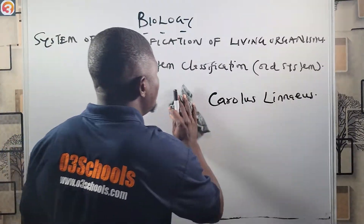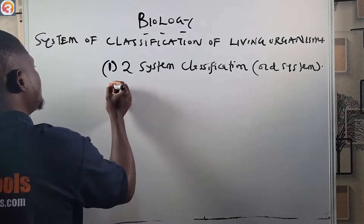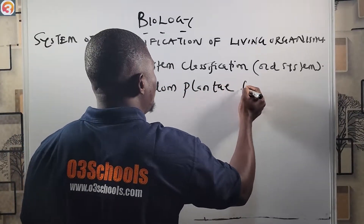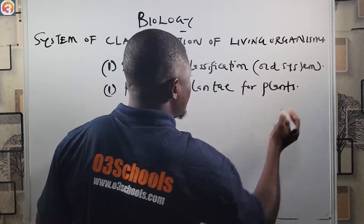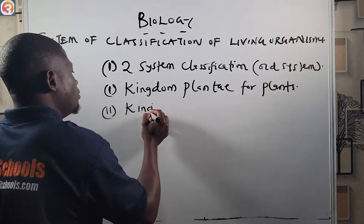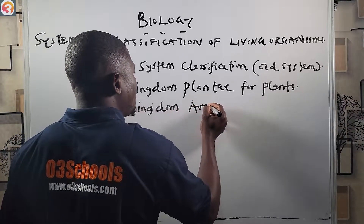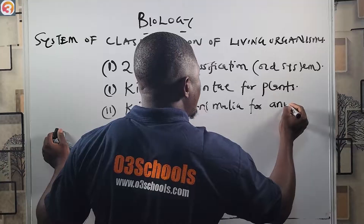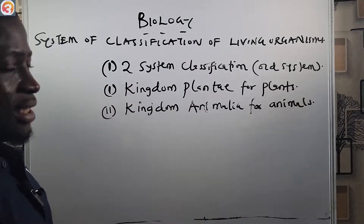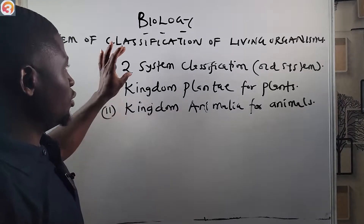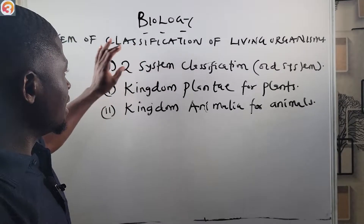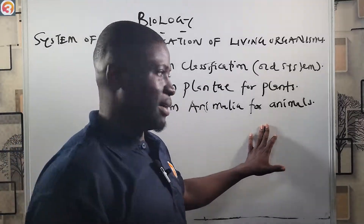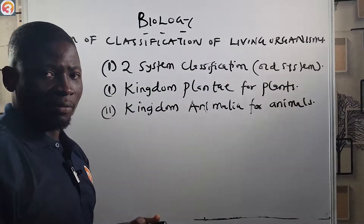The first kingdom is Kingdom Plantae, for plants, and the second is Kingdom Animalia, for animals. This is the two-kingdom classification by Carolus Linnaeus — it classified living organisms into Kingdom Plantae for plants and Kingdom Animalia for animals.